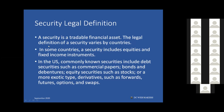A security is a tradable financial asset, and the laws and legal definitions vary from country to country. In some countries, security includes equities and fixed income instruments. In the US, securities include debt securities such as commercial papers, bonds, and debentures, and equity securities such as stocks, as well as more exotic types like derivatives — forward contracts, futures, options, and swaps.